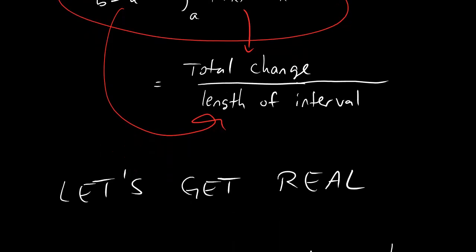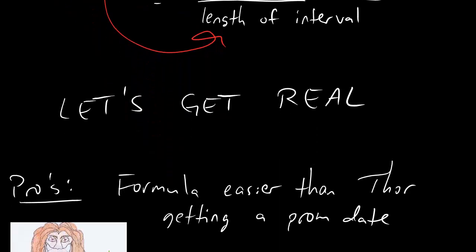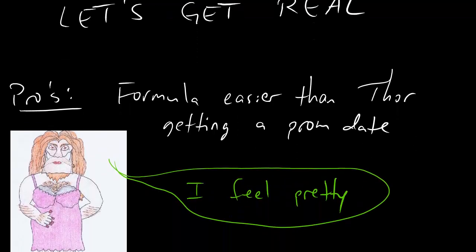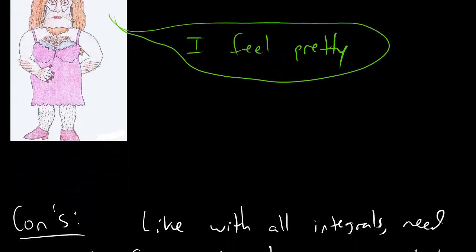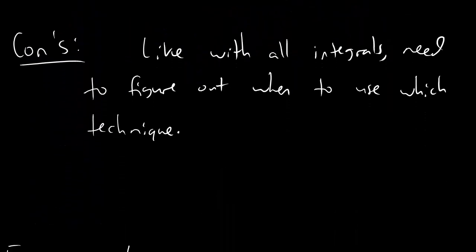But dudes, let's talk about how you're going to be seeing this in problems and such. There's an advantage to this formula, which is that a formula is easy. You can just plug crap in, you can calculate that puppy, and it's going to be nice and easy. Now, there's a disadvantage, too. The disadvantage is this. The formula involves an integral, and like everything that we do that involves integrals, you're going to have to figure out when to use which technique.